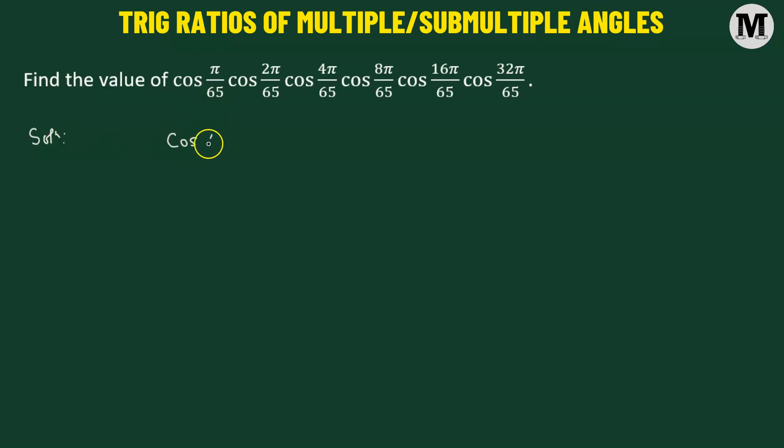Here we have cosine of angle pi over 65, multiplied to cosine of 2 pi over 65, multiply to cosine of 4 pi over 65, which can also be expressed as 2 squared pi over 65.